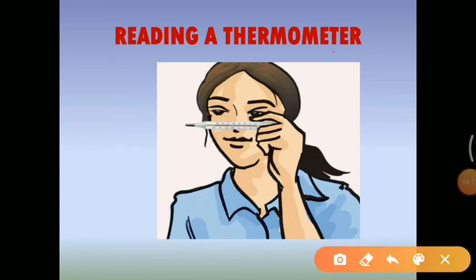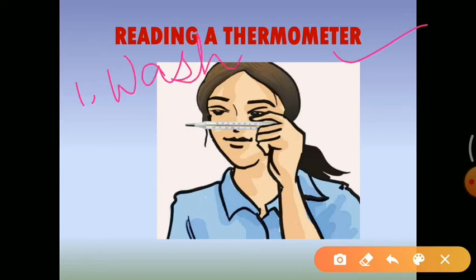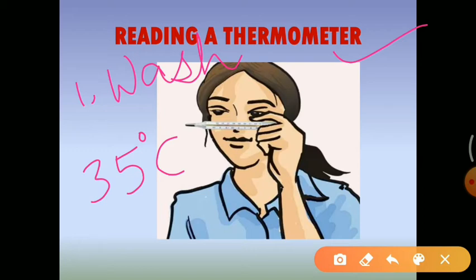Now let's see how we can read a thermometer. First of all, you have to wash the thermometer, preferably with an antiseptic solution. Then hold it carefully, and if the mercury level inside is not below 35 degrees Celsius, give it a few jerks so that the mercury comes down.